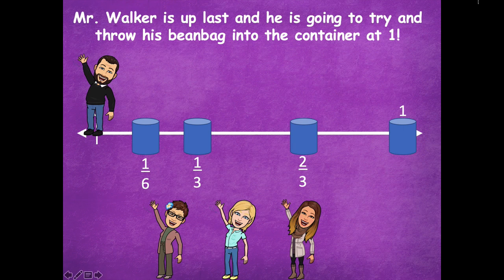Mr. Walker is up last and he's going to try and throw his bean bag into the container at one. I tried twice and I couldn't do it — it's the greatest distance from zero. He didn't get it either. That greatest distance from zero is going to be harder to get to.